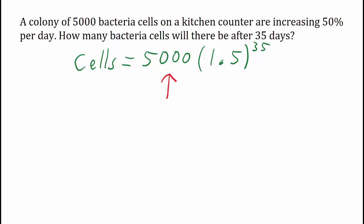The 5,000 is what we started with. The 1.5 is the multiplier. To get the multiplier, it was just 1 plus the growth rate. And the 35 was the amount of time.